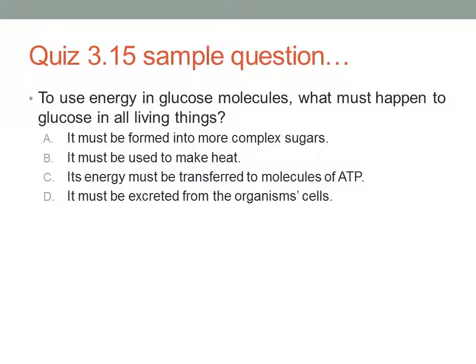ATP is an energy molecule that we can use for energy. Here's a sample question: to use the energy in glucose molecules, what must happen to glucose in all living things? A: It must be formed into more complex sugars. B: It must be used to make heat. C: Its energy must be transferred to molecules of ATP. Or D: It must be excreted from the organism's cell.